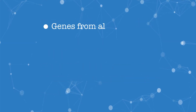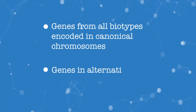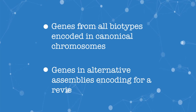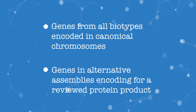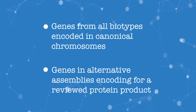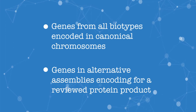We include genes from all biotypes encoded in canonical chromosomes, as well as genes in alternative assemblies encoding for a reviewed protein product. Human targets are often protein-coding genes, but they can also be RNAs or pseudogenes, so this inclusion criteria gives us some flexibility.